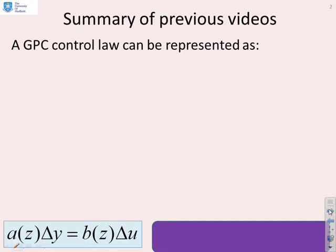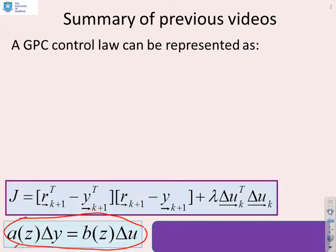What we've said is if you have a model, a CARIMA type model or something which can be represented in this form, a(z)Δy = b(z)Δu, and you have a performance index, something like this, the sum of tracking errors squared plus control increments squared.